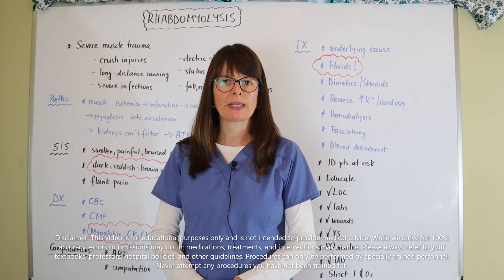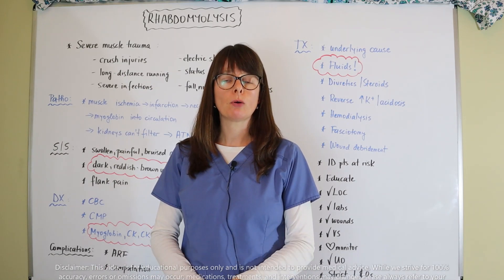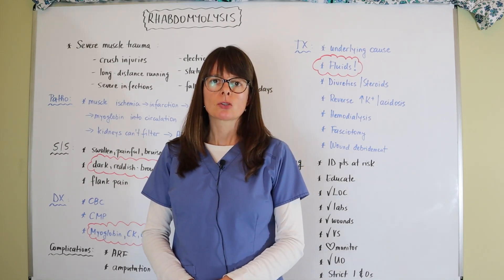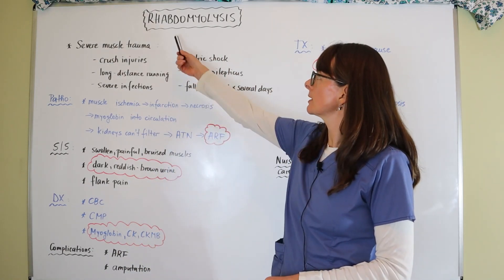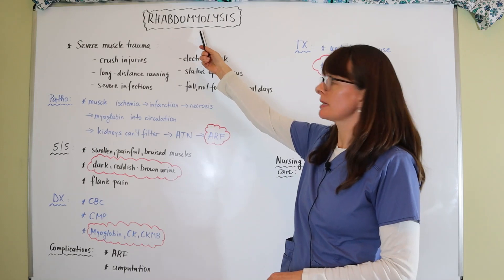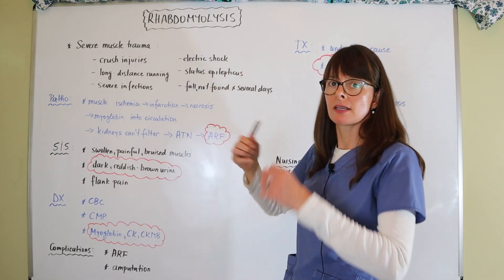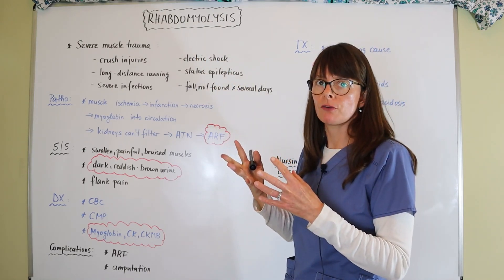Welcome to Nursing School Explained and this video on rhabdomyolysis. If we look at the meaning of the word, rhabdo usually pertains to a rod or wand. Myo is muscle and lysis is the destruction of muscle.